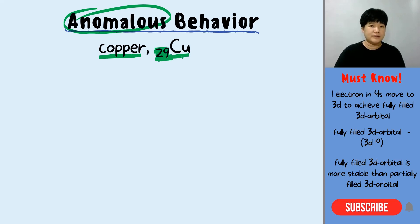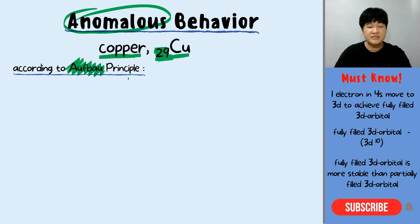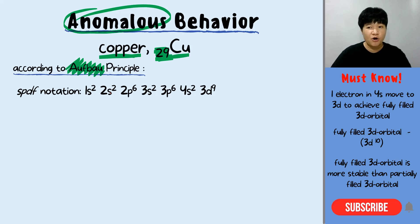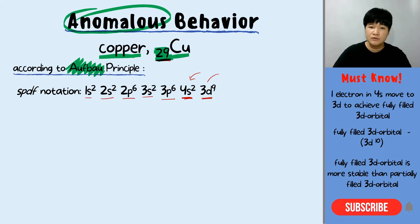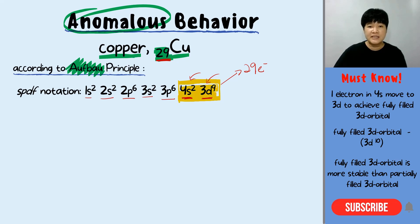Next, the anomalous behavior of copper. Copper has 29 protons, meaning we have 29 electrons to arrange. According to the Aufbau principle, the electrons are filled into lower energy orbitals first: 1s2 2s2 2p6 3s2 3p6 — that is 18 electrons. After 3p6, we fill into the 4s first because 4s has lower energy than 3d. After filling 4s, we fill into the 3d, giving a total of 29 electrons. The valence electrons of copper are 4s2 and 3d9.